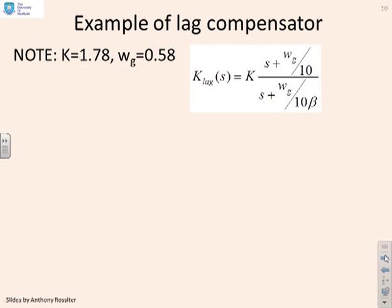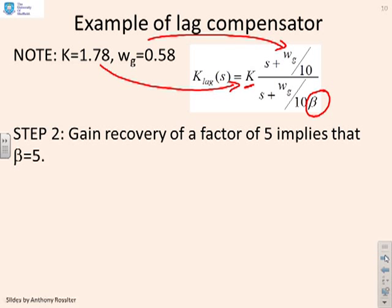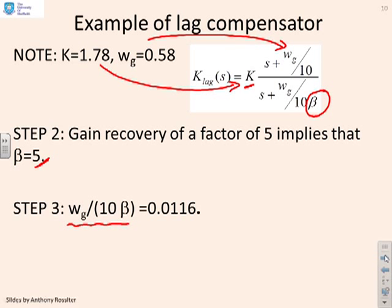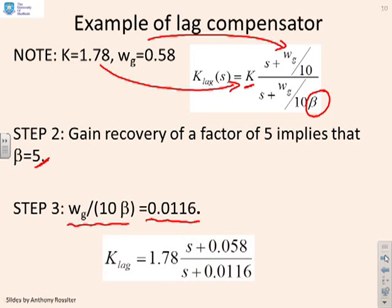Recalling the formula for the lag compensator: K times (S + omega_g/10) over (S + omega_g/(10·beta)), with K=1.78 and omega_g=0.58. The only remaining unknown is beta — we want a gain recovery of factor 5, so beta=5. Plugging in, omega_g over 10·beta gives 0.0116. So the lag compensator is: 1.78 times (S + 0.058) over (S + 0.0116), where 0.058 is omega_g/10 and 0.0116 is omega_g/(10·beta).